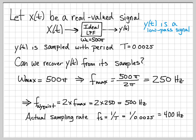So we actually sampled at 400 hertz, and the Nyquist rate was 500 hertz. Since we sampled at a rate less than the Nyquist rate, that's a problem. We cannot recover y of t from its samples, because we violated Nyquist sampling theorem. So no, we cannot recover y of t from its samples.